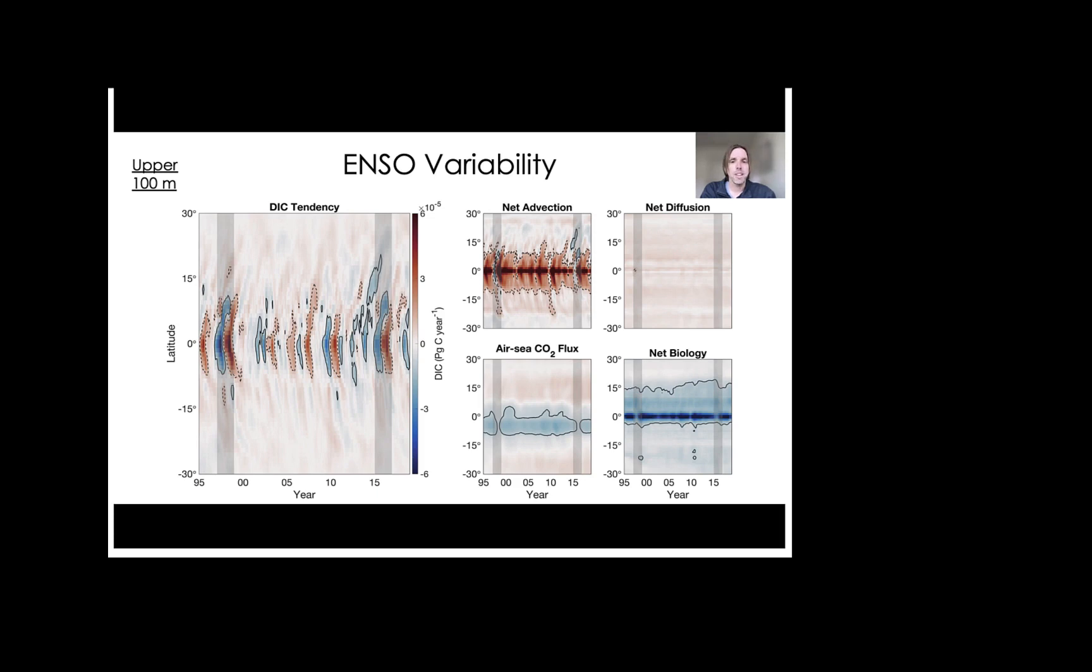For the DIC tendency term, which is shown as the large panel on the left-hand side, you can clearly see the influence of diverse ENSO events, with El Niños causing a loss of DIC and La Niñas causing a subsequent rebounding gain of DIC. These signals tend to originate near the equator and are then advected polewards with the passage of time. The shaded vertical lines show the 1997-1998 and also the 2015-2016 ENSO events.